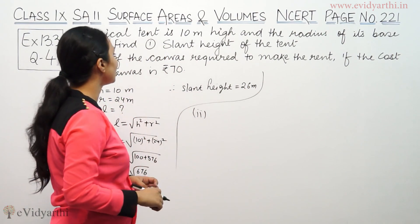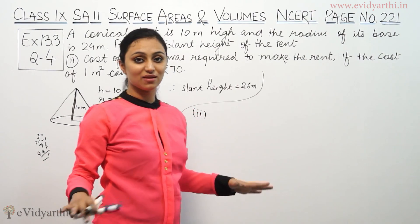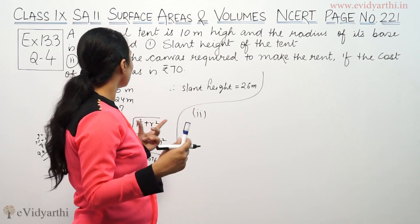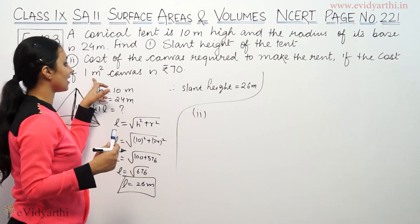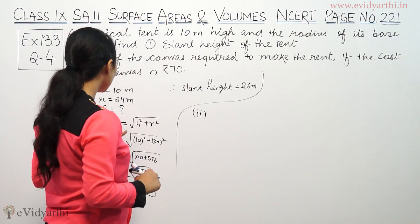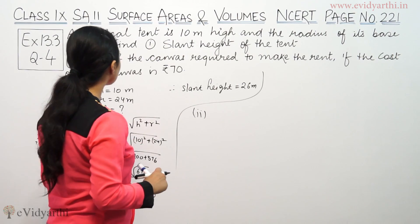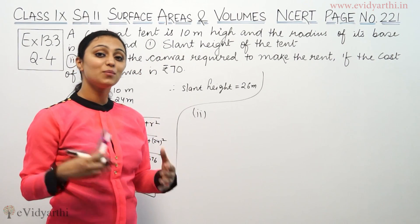Part B: Find the cost of canvas required to make the tent. One meter square canvas costs 70 rupees. We need to find the total overall cost. If 1 meter square is 70 rupees, we first need to find the total surface area.